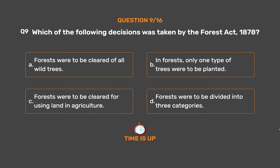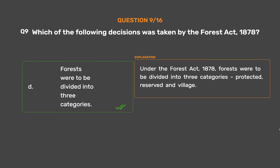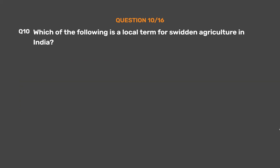The correct answer is Option D. Forests were to be divided into three categories. Under the Forest Act of 1878, forests were to be divided into three categories: protected, reserved, and village.